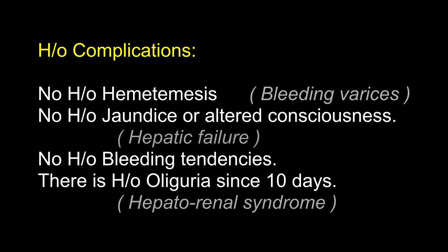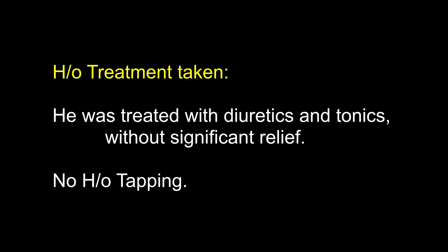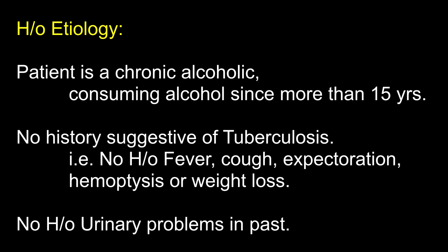Regarding history of complications: there is no history of hematemesis, no history of jaundice or altered consciousness, no history of bleeding tendencies. There is history of oliguria since 10 days. What are the causes of oliguria in ascites? Hepatorenal syndrome in cirrhosis of liver, and diminished glomerular filtration rate with sodium and water retention due to hyperaldosteronism. He was treated with diuretics and tonics without significant relief. No history of tapping. Ascites not responding to the regular medical line of treatment is termed as refractory ascites.